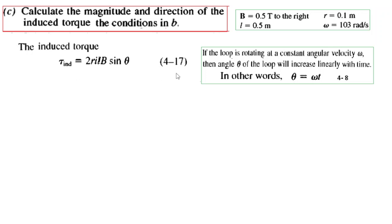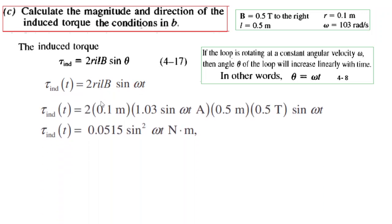The formula given in the book is in terms of theta. But here is an explanation that if the loop is rotating at a constant angular velocity omega, then the angle theta of the loop will increase linearly with time. That means theta is dependent with time or theta can be written to be equal to omega t. So we will replace this theta with omega t because everything else is in terms of omega t. So omega t. And now we plug in the values. So this is our t induced.